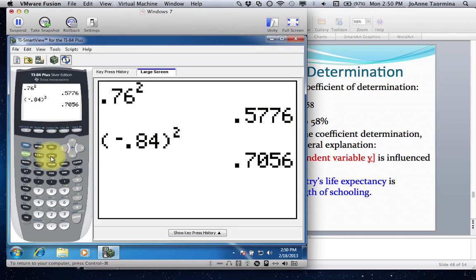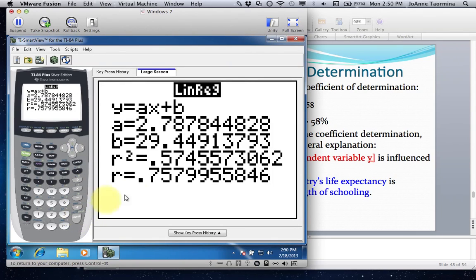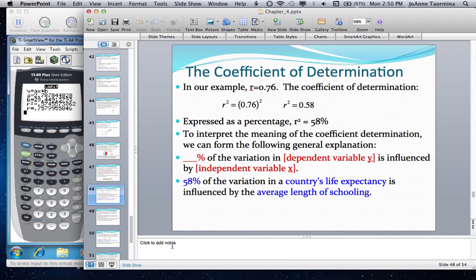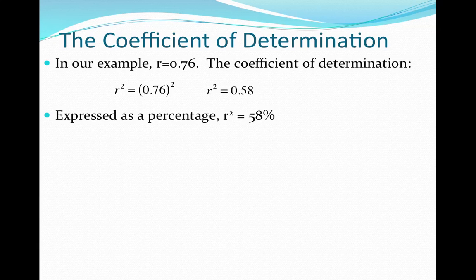A more precise coefficient of determination can be found by using the LinReg feature on the calculator. In this case it comes out to be .57, because the third decimal is a 4, making it a little more precise since we didn't work from the rounded value of r. It depends on the problem. If you're provided with a value for r, the best you can do is square it — so squaring .76 gives r squared equals .58, and multiplying by 100 gives 58%.